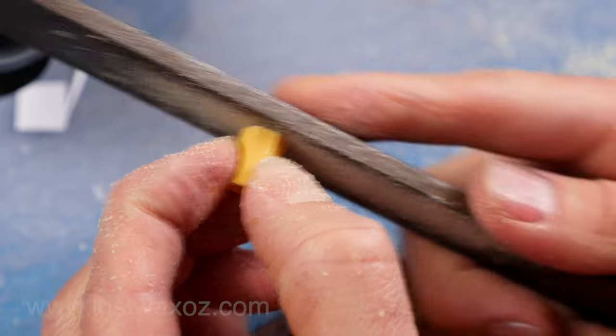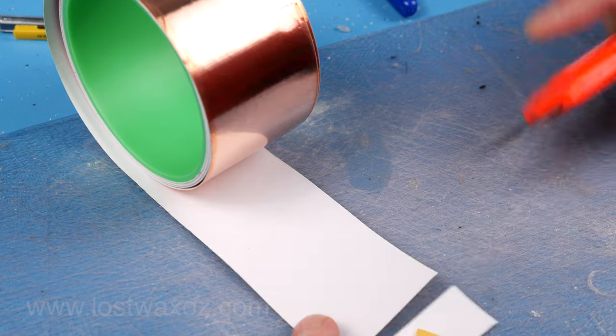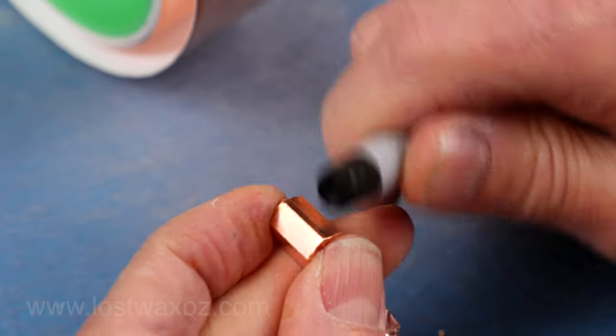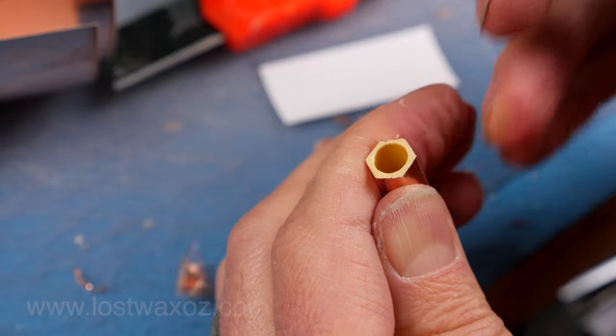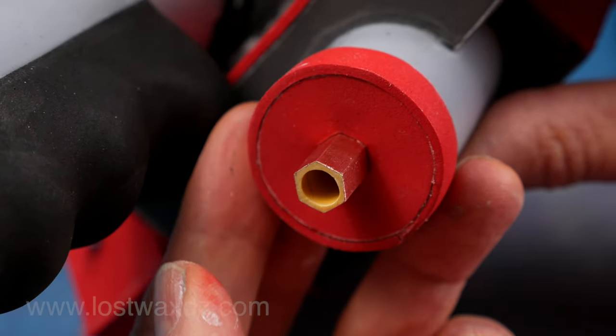File the ends nice and flat, grab some copper tape and wrap up those hexagons. Alternatively you could just paint it with some copper paint. Trim the copper tape off flush with the top and bottom. One gets glued on the right hand side of the instrument bar and one in the center of the rear cylinder.